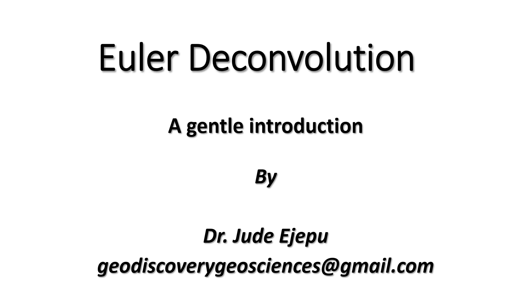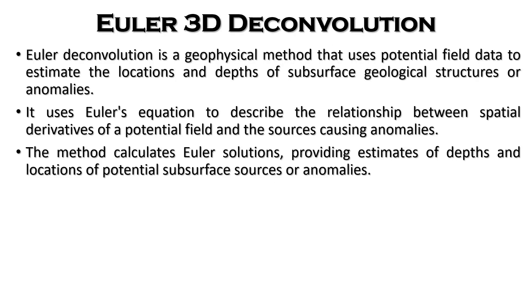In this first video we are going to talk about the theory behind Euler deconvolution. You can contact me through this email address. What is Euler deconvolution? Euler deconvolution is a geophysical method that uses potential field data to estimate the locations and depths of subsurface geological structures or anomalies. It uses Euler's equation to describe the relationship between spatial derivatives of a potential field and the sources causing these anomalies.